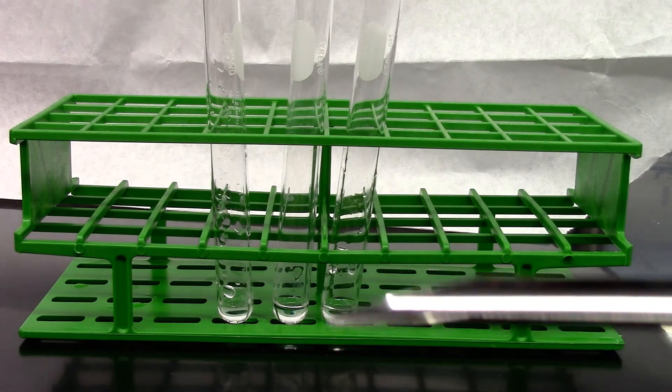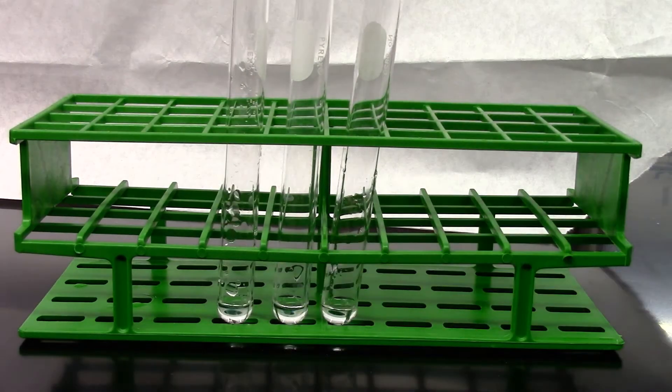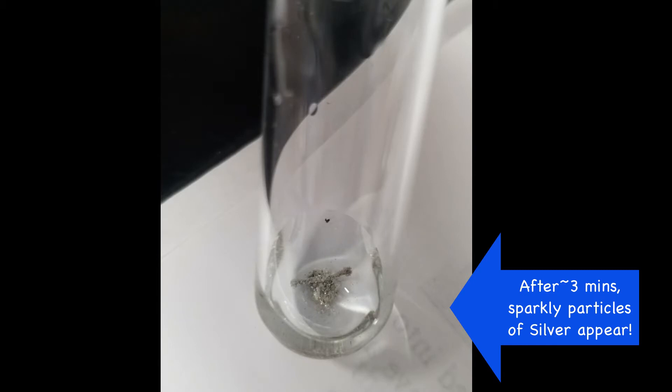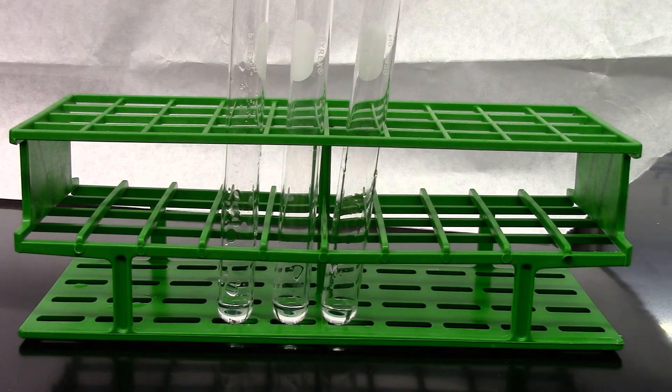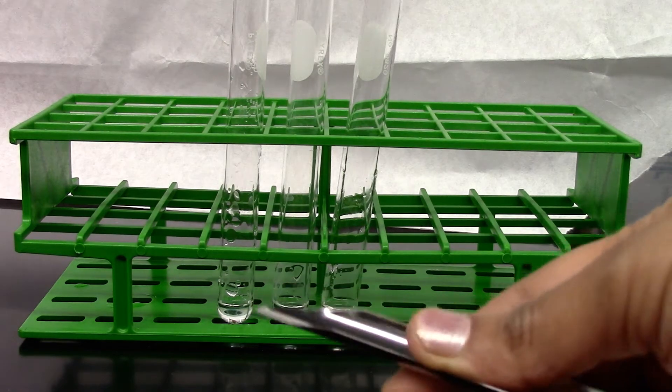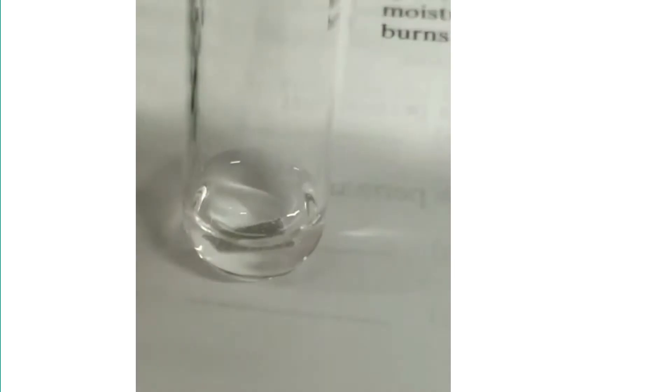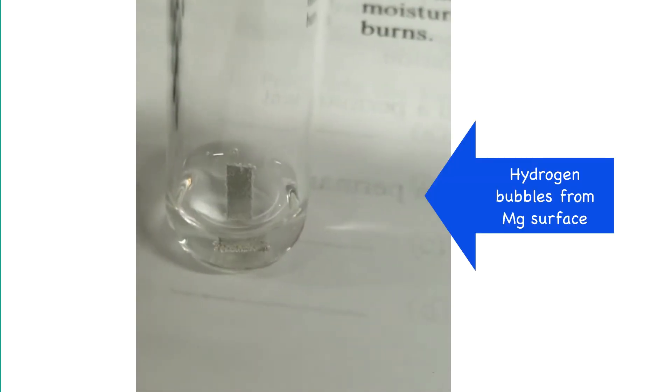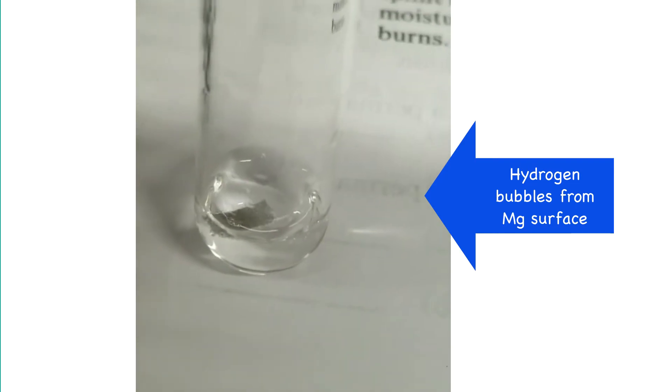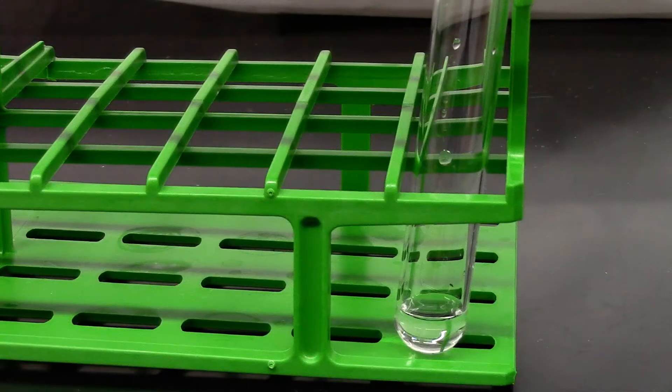So to the first test tube I'm going to add a small piece of copper. The second test tube I'm going to add a small piece of magnesium. And the third test tube I'm going to add a tiny piece of calcium metal.